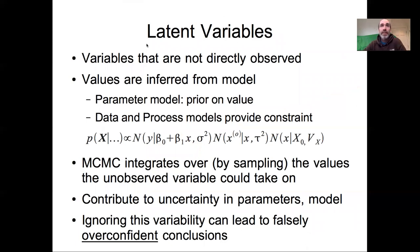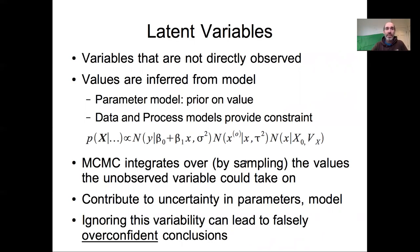More broadly, this idea of errors-in-variables introduces a really important statistical concept we'll leverage in many other models throughout this semester: latent variables — any variable where we're not observing the state of the system directly, so its values have to be inferred from the model. That requires us to have a prior on their values, and both the data and process models provide constraint on estimates of the latent variables. Here we had a data model from Y, a data model from the observed X, and a prior. The MCMC will integrate over this uncertainty in the X's by numerically sampling the values the unobserved variable could take on. It does contribute uncertainty to our parameter estimates, but ignoring that variability would lead to falsely overconfident conclusions.